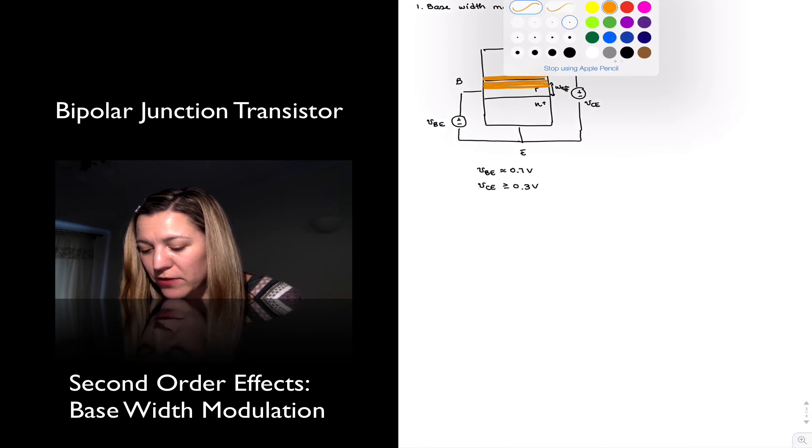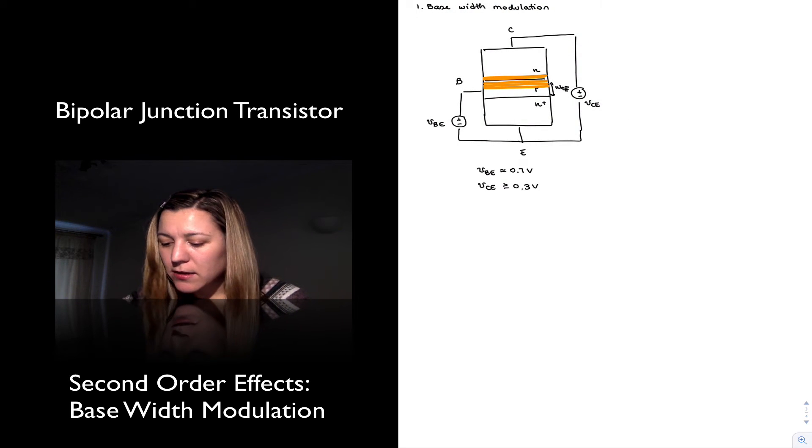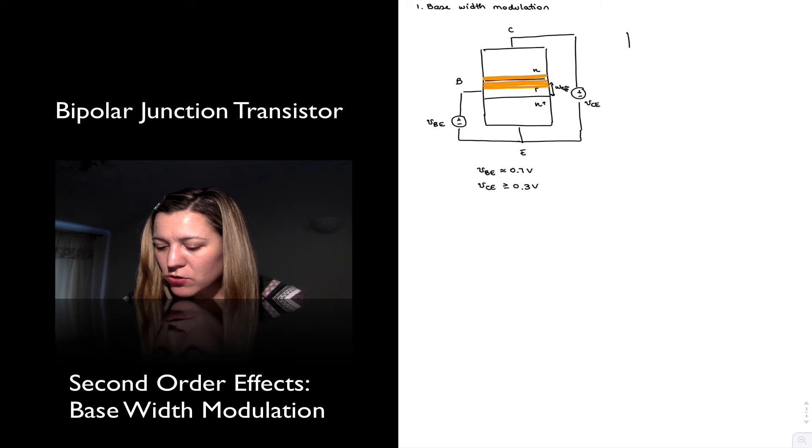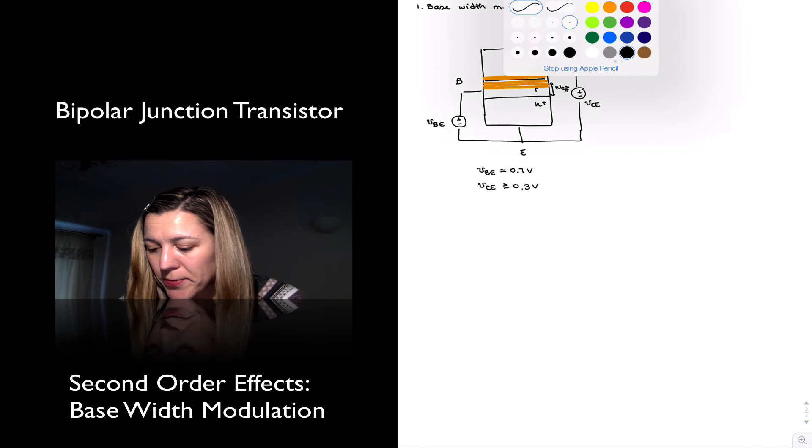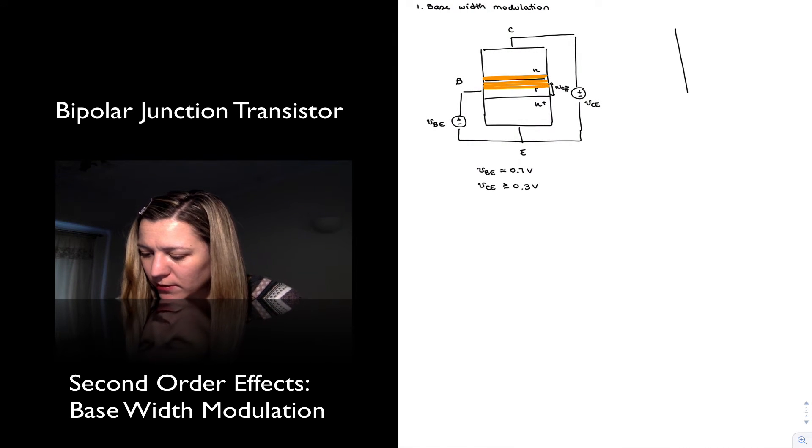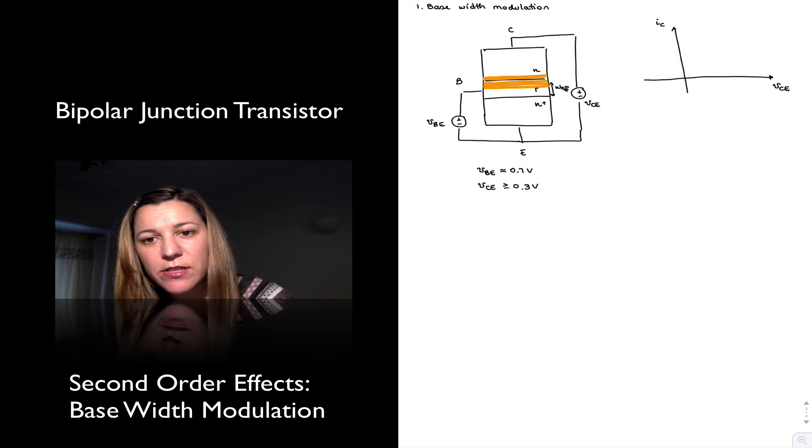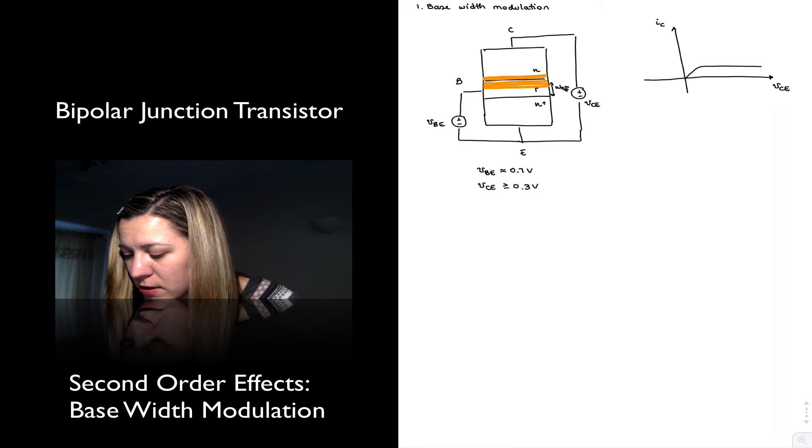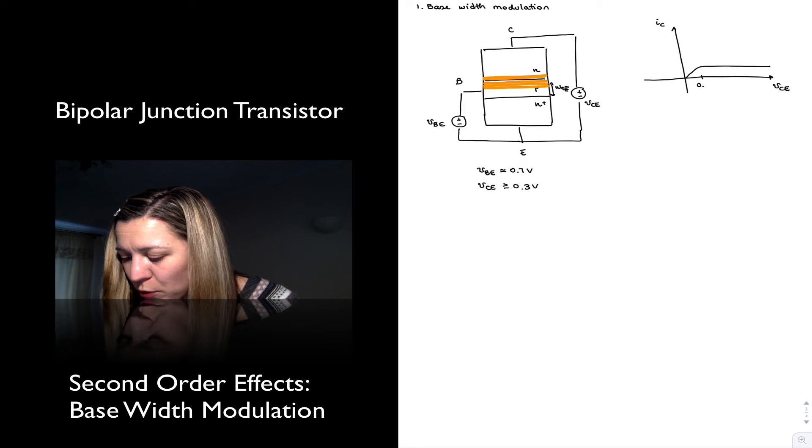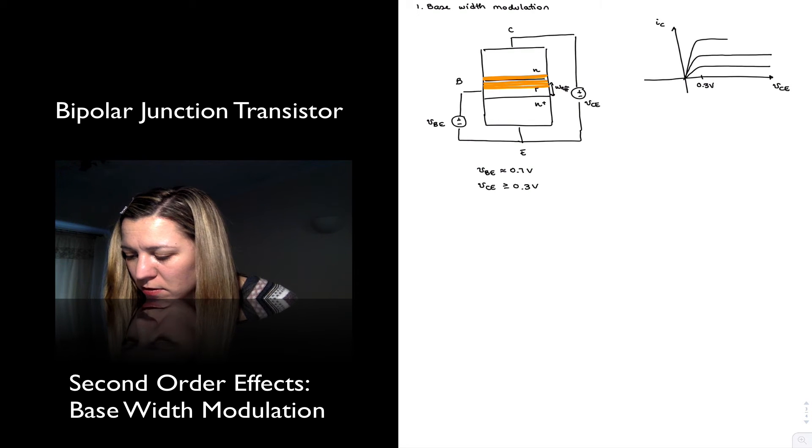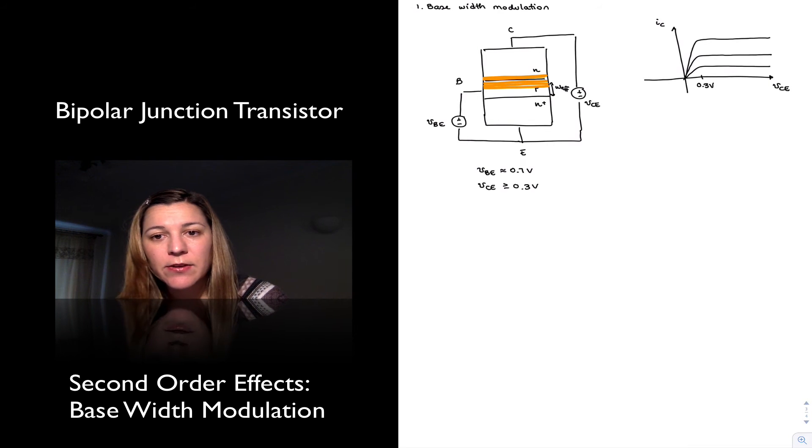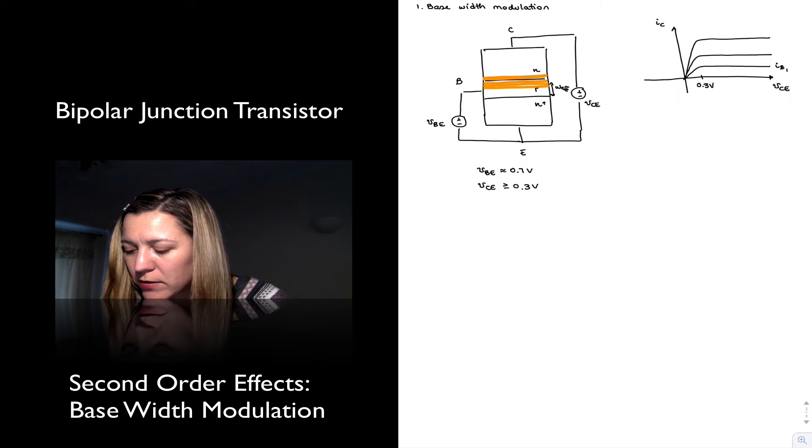So what's the effect of that? Well, we just studied our IV characteristic for the transistor and we said, after we enter the linear region, we have that IC is approximately constant for increasing values of VCE. So it looks something like this. Once we are past that 0.3 volts saturation voltage, our output current is constant regardless of VCE, and its value is just determined by the base current.